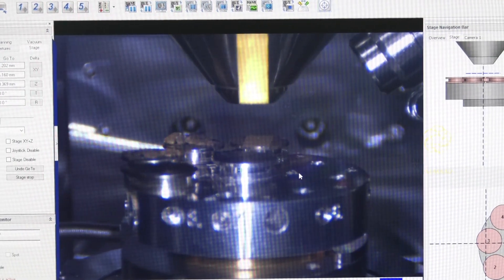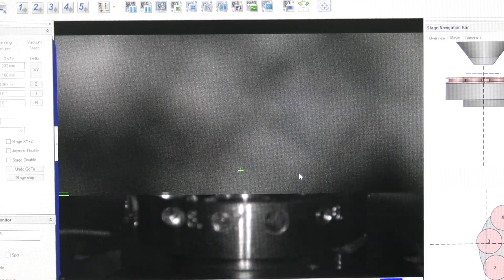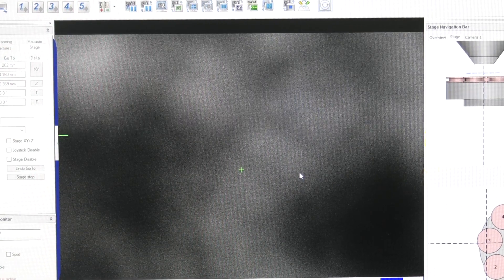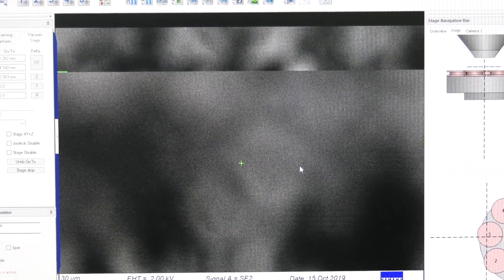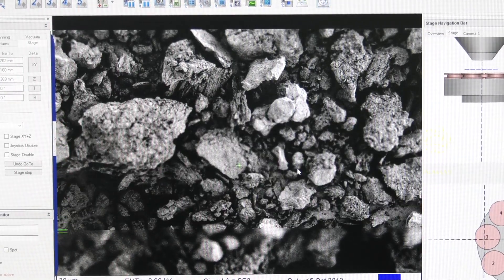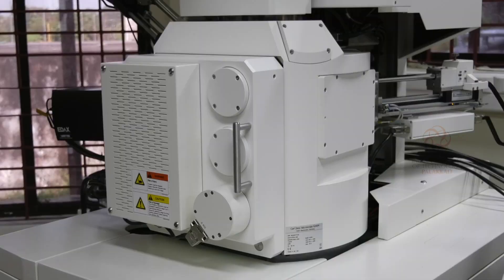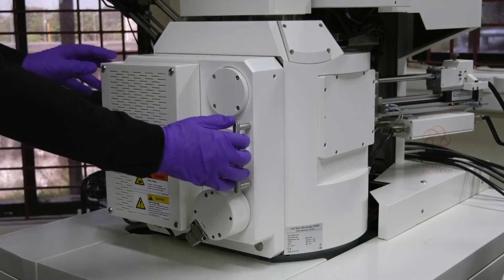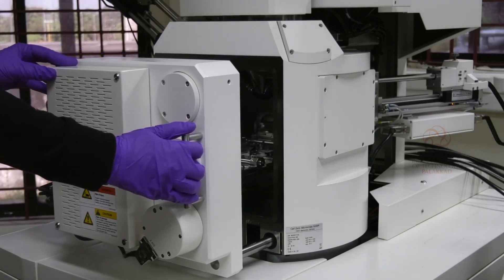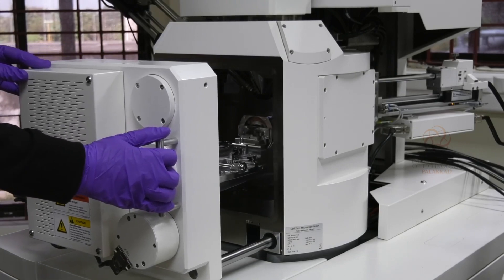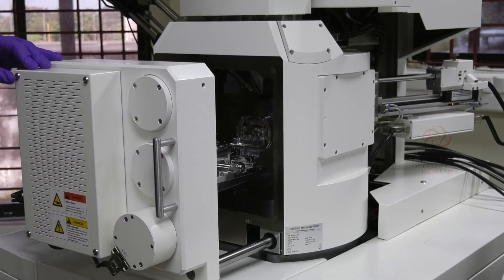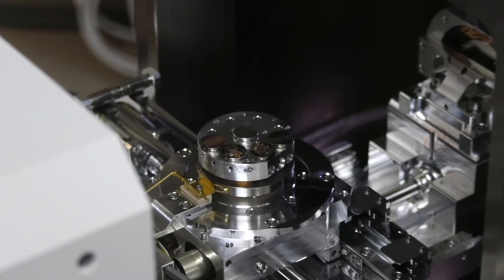Apart from the standard imaging, the FE-SEM is capable of performing electron backscatter diffraction for studying the texture in crystalline and polycrystalline materials, energy dispersive X-ray spectroscopy and E-beam lithography for fabricating micro-level devices for electronic communication applications.